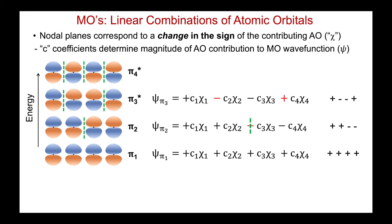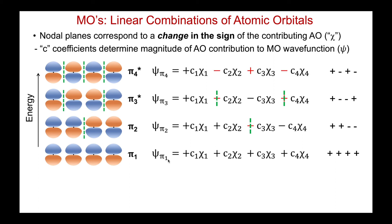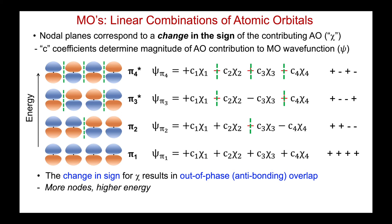As we go up to ψ3, the number of nodal planes systematically increases to two. The contributions are: plus for chi1, minus for chi2 — there's the first nodal plane. Then minus for chi3 — no nodal plane, the sign hasn't changed. Then plus for chi4 — a change in sign and another nodal plane. Finally in ψ4, the most antibonding and highest energy molecular orbital, the signs alternate: plus, minus, plus, minus. The nodal planes are positioned at each sign change, giving three. It is the change in sign of the contributing atomic orbital that results in the out-of-phase antibonding overlap. The more the nodes, the higher the energy.